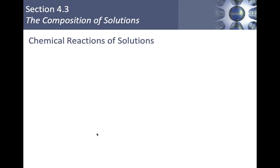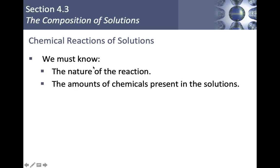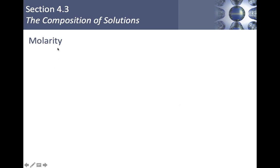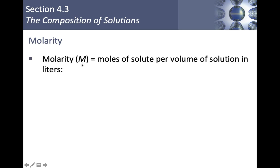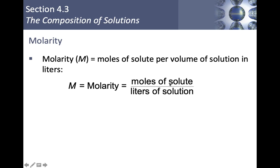Section 4.3: the composition of solutions. Now we're getting into how to quantify this information. To do any chemical stoichiometry with solutions, we need to know what kind of reaction we're looking at and how much of each chemical is in the solutions we're mixing. The first important definition and formula is molarity. Molarity is represented by a capital M and equals moles of solute per volume of solution in liters.